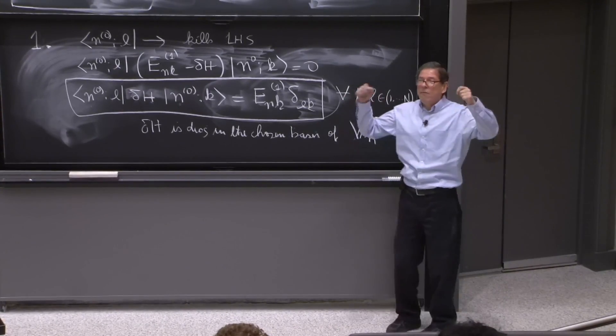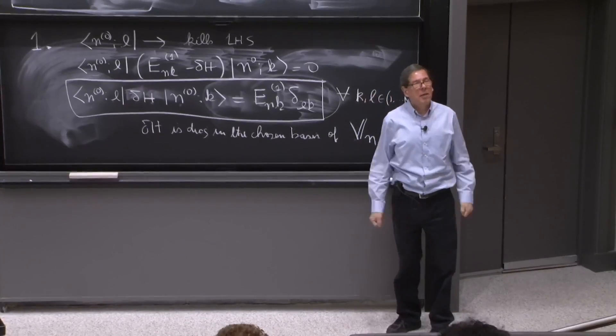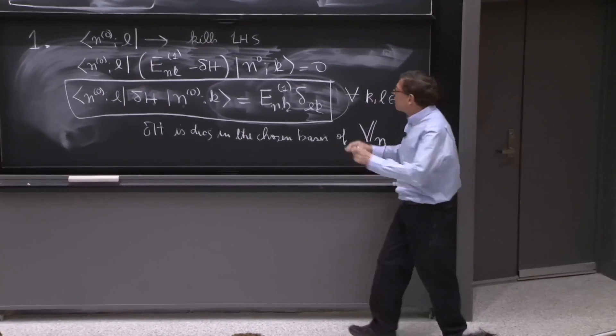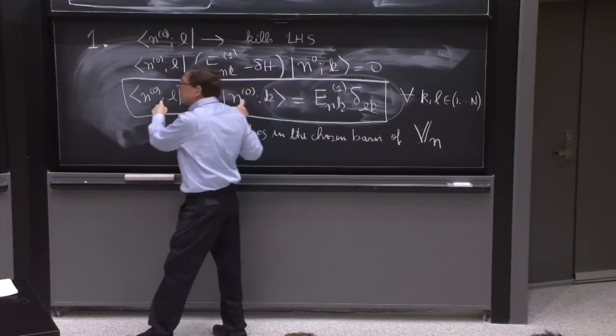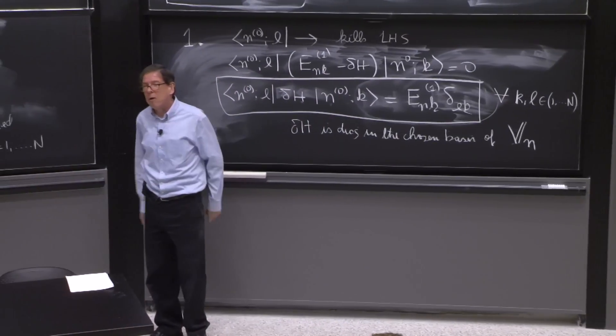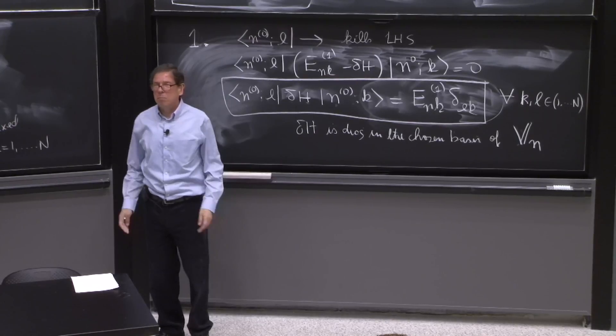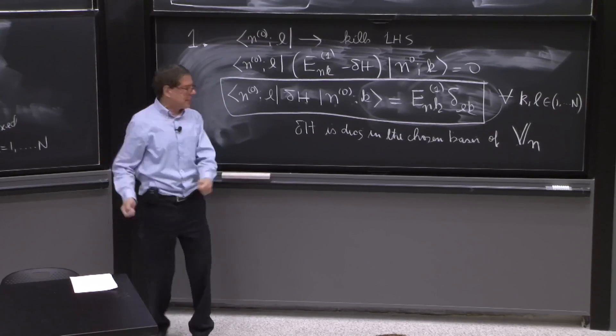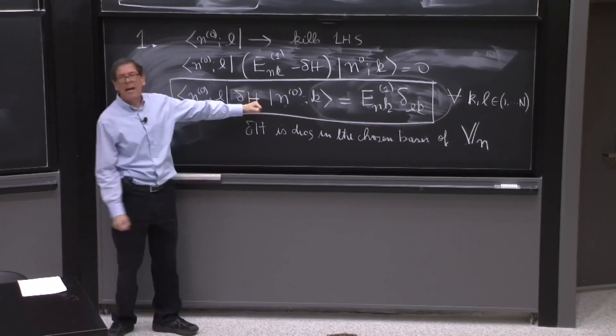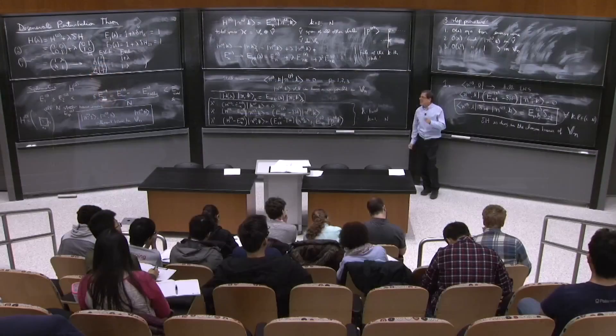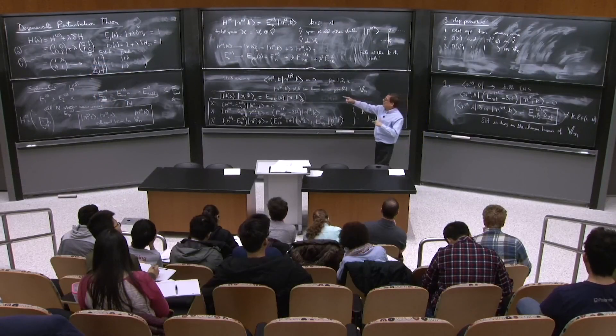So what it says is that if you want to start your perturbation theory, you cannot use an arbitrary basis of states. Maybe you chose it wrong. You have to start in the degenerate subspace with a basis that makes the perturbation diagonal. And that's what our little example had.